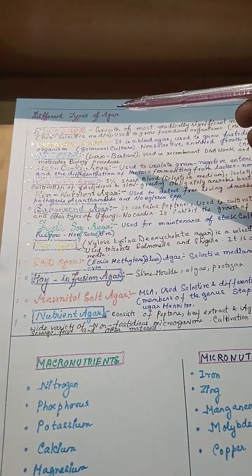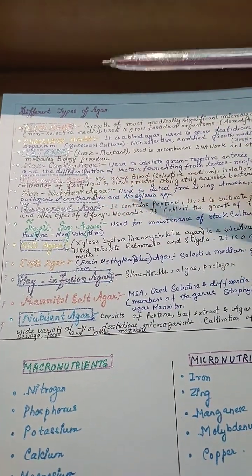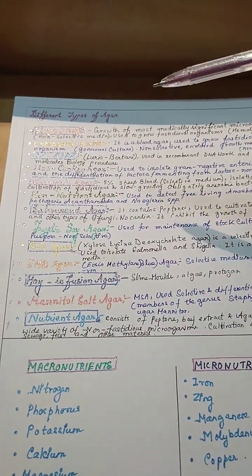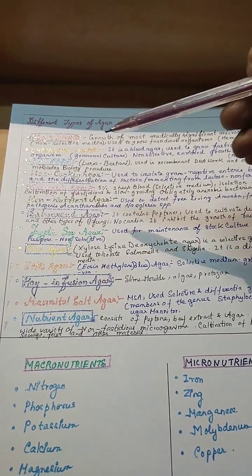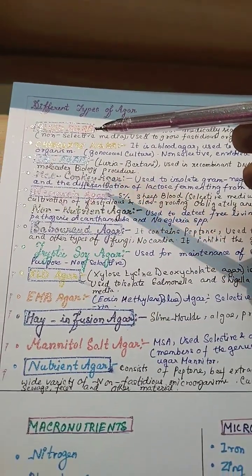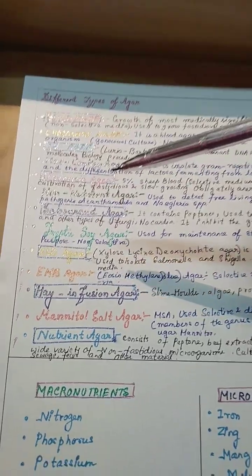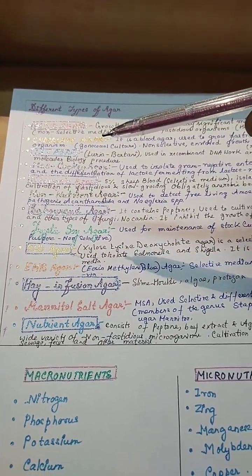These different types of agar are used to culture microorganisms, different types of microorganisms like fastidious and non-fastidious. These agars are classified as selective and non-selective or differential.